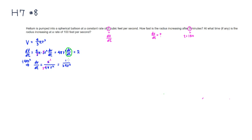We need to know the R value. After 3 minutes, which is 180 seconds, the volume is going to be — starting from 0, at 2 cubic feet per second — equal to 2 times 180, so the volume after 3 minutes is 360.